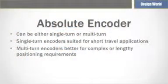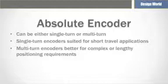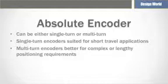Absolute encoders can be either single-turn or multi-turn. Single-turn encoders are well-suited to short-travel motion control applications where position verification is needed within a single turn of the encoder shaft. Multi-turn encoders, on the other hand, are better for applications that involve complex or lengthy positioning requirements.